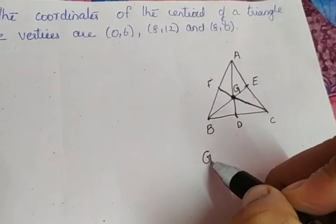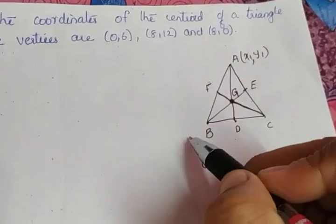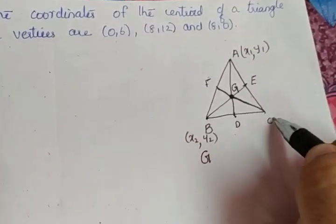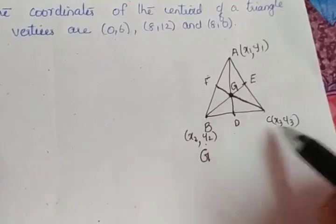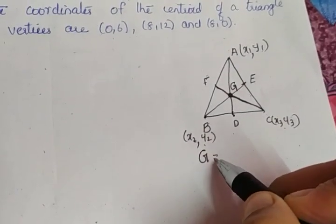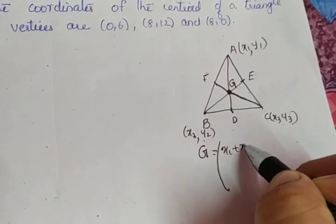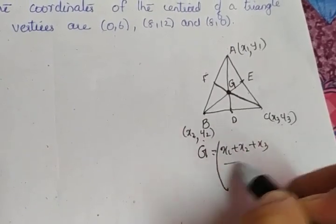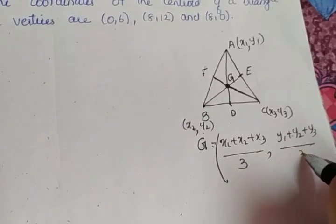To find the centroid, we have a formula. Again, X1, Y1, let it be the coordinates of A. X2, Y2 be the second vertex and X3, Y3 be the third vertex. That means X1, Y1, X2, Y2, and X3, Y3 are the coordinates of A, B, and C. So, if this is the condition, the coordinates of G is given by (X1 + X2 + X3)/3, (Y1 + Y2 + Y3)/3.